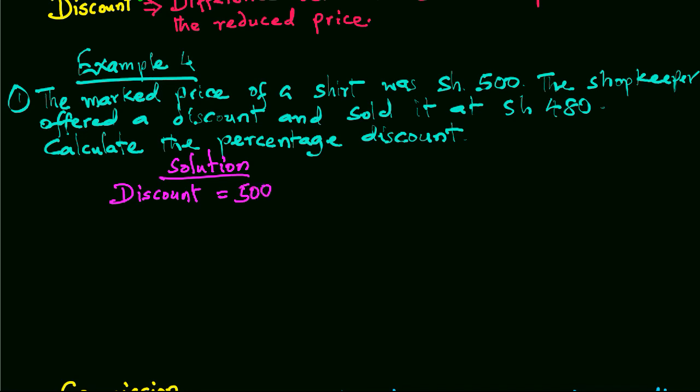So a discount of 20 shillings was given. Therefore, percentage discount will be the discount given over the marked price times 100, and this we get 4 percent.